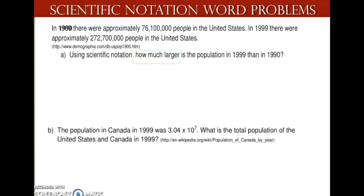We're going to look at how much larger the population is. The first thing we're going to do is convert our standard notation into scientific notation. So, 1990 becomes 7.61 times 10 to the 7th power. 1999 becomes 2.727 times 10 to the 8th power.